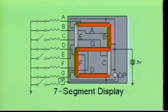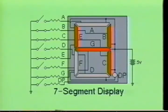By turning on segments A, B, D, F, and G, the decimal number two is displayed. Or by energizing segments A, B, C, D, and G, decimal number three can be displayed.